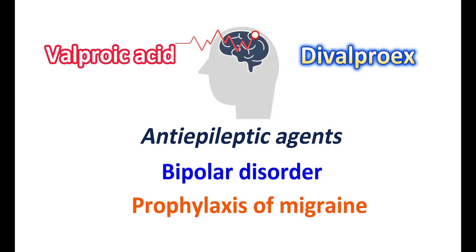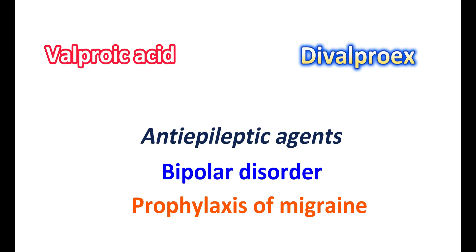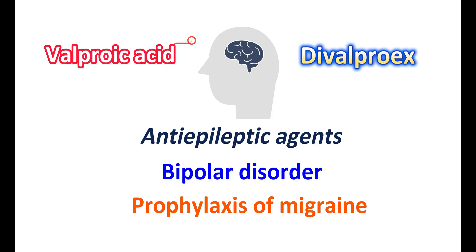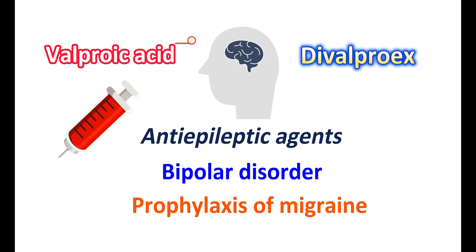In bipolar disorder, mood swings occur from mania to depression and vice versa. In such people, consistent medication levels are required, and any fluctuations in plasma concentration may produce mood swings, which is highly undesirable. Therefore, divalproex sodium is more preferred in the treatment of bipolar disorder, as it produces consistent plasma concentrations of valproic acid with less fluctuation in side effects. On the other hand, valproic acid is available as an injectable solution, so it can be given in hospitals and also as oral solution for acute conditions.